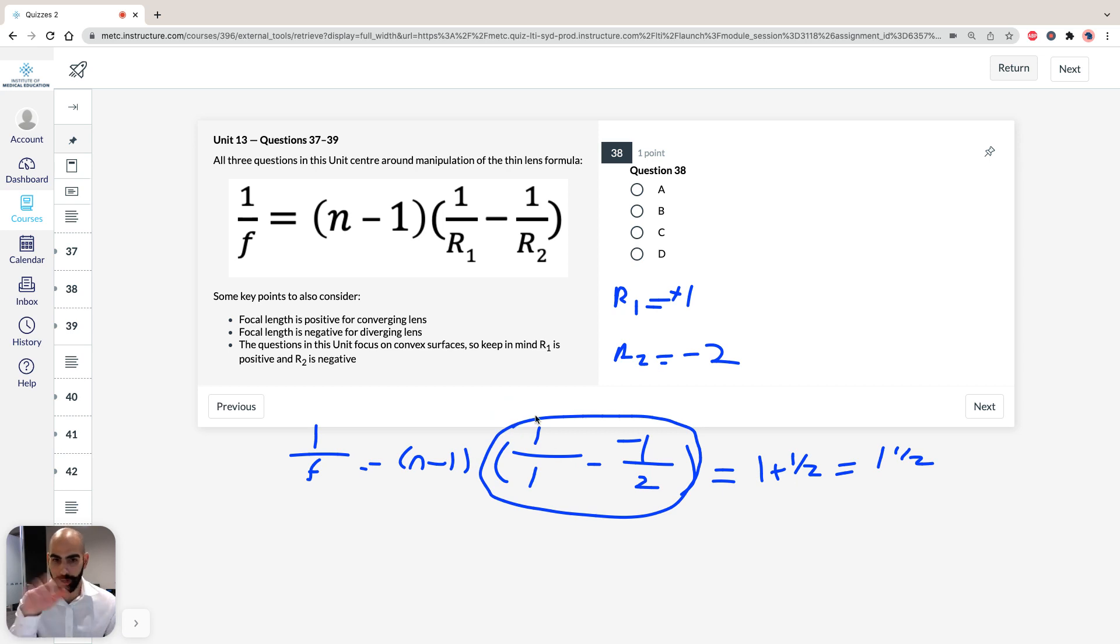So let's just reverse it then. How about we make it R1 is equal to 2 and R2 is equal to, because it has to be negative, minus 1. Let's do that. So it's going to be the same thing. So 1 over F equals N minus 1. So it's going to be 1 over 2 minus minus 1 over 1. So we know, therefore, 1 half plus 1. So 1 half plus 1 is equal to 1 and a half.